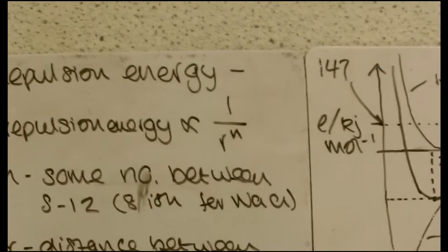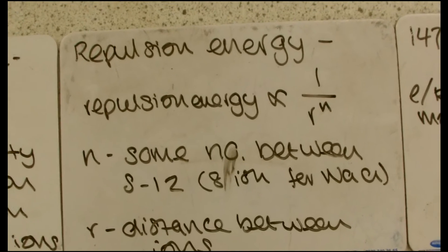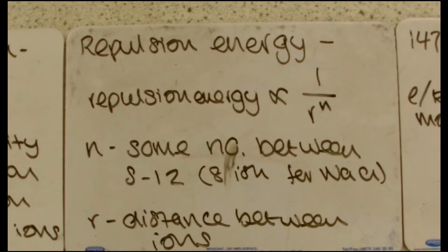So what we have to figure in is the repulsion energy. The repulsion energy, you don't really need to know that much about it, but essentially it's just related to 1 over R to the N, where N is some number between 5 and 12.